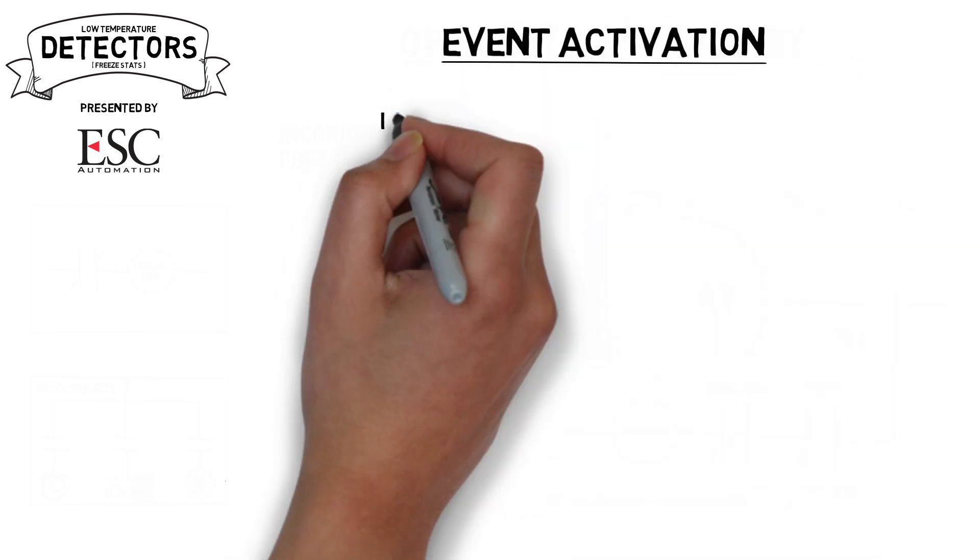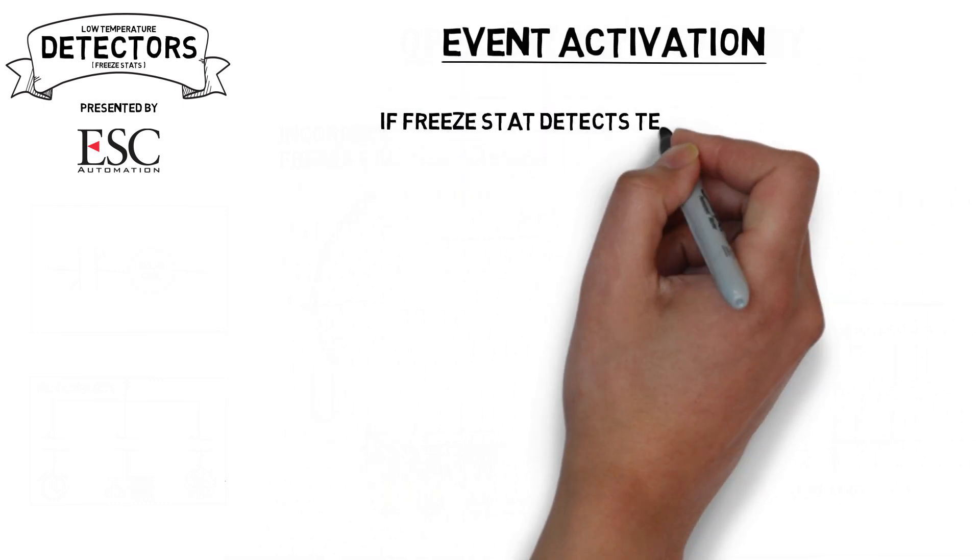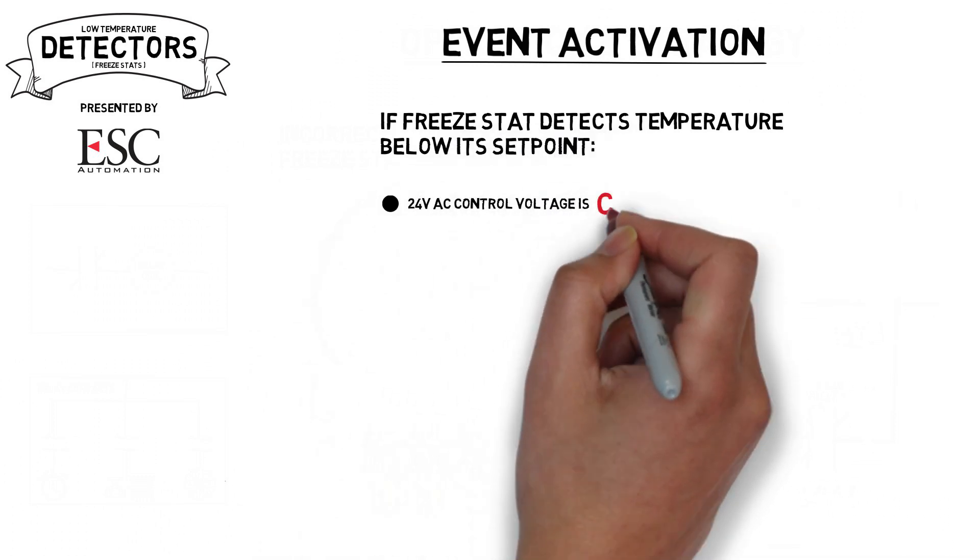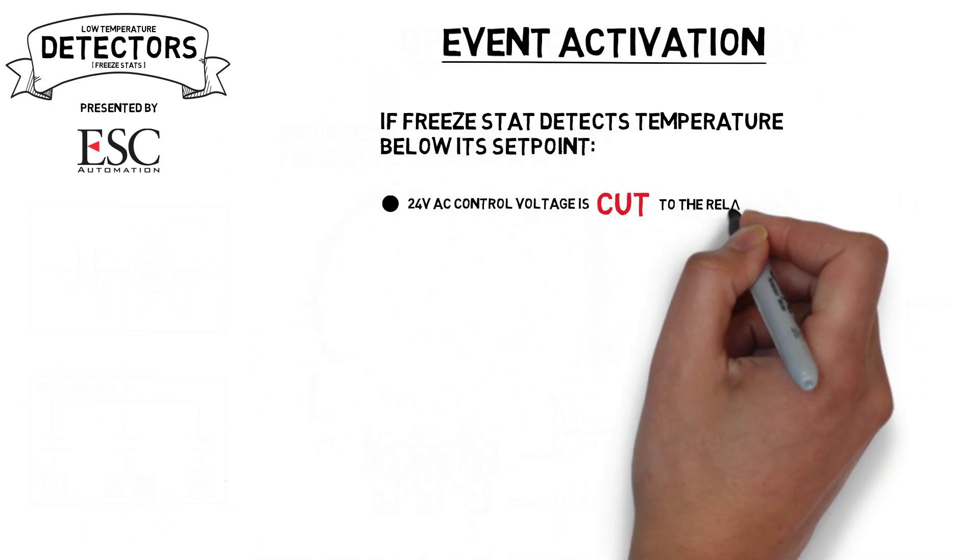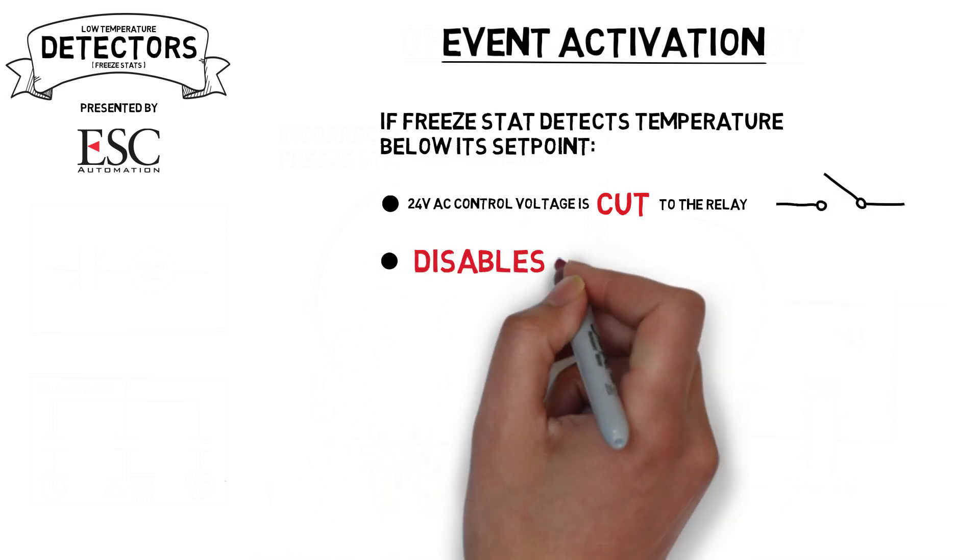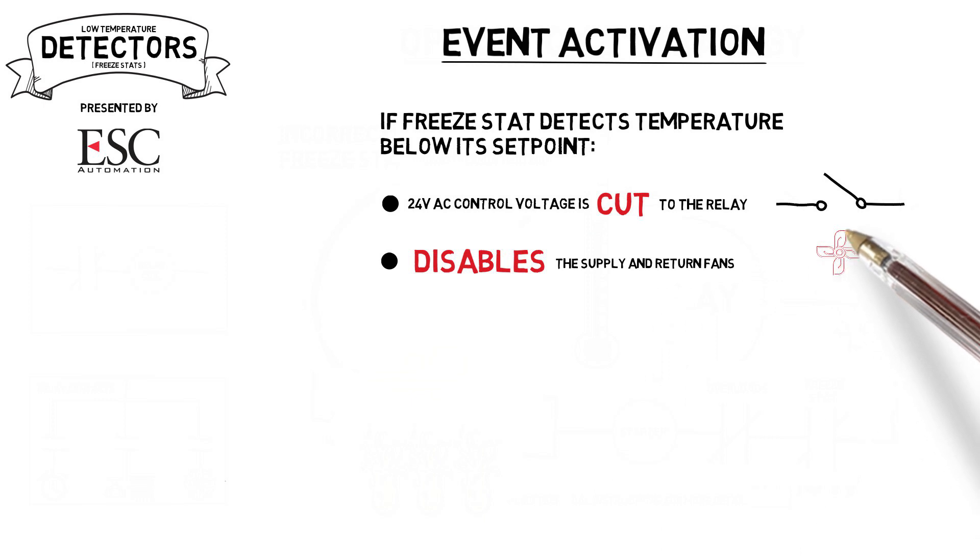The controls on the freeze stat are wired such that when a low temperature is detected, the 24 volts AC control voltage is cut off and the relay opens its contacts. This effectively disables the supply and return fans, whether they're in auto mode or manual mode.